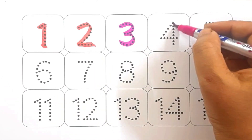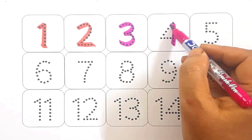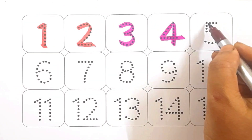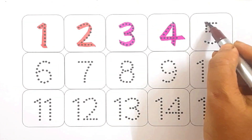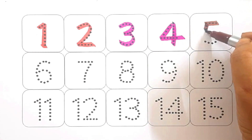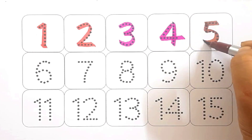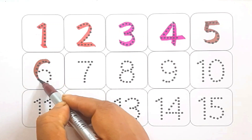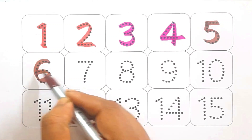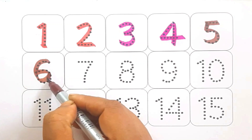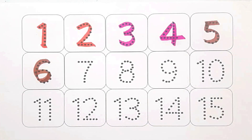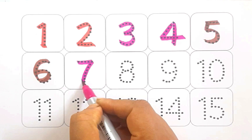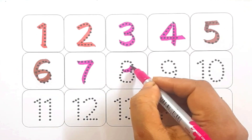Four: purple color. Five: brown color. Six: brown color. Seven: purple color.